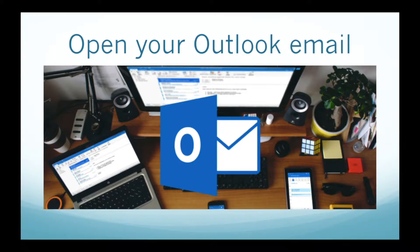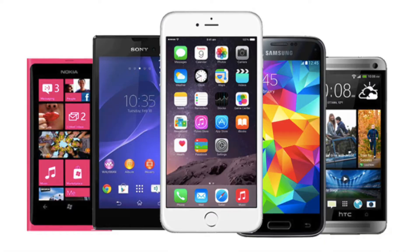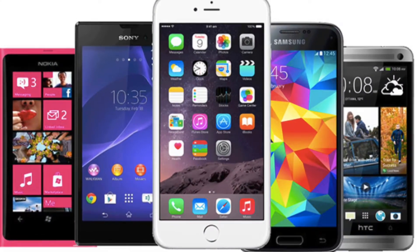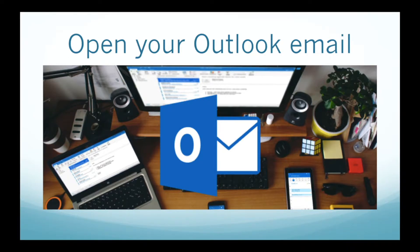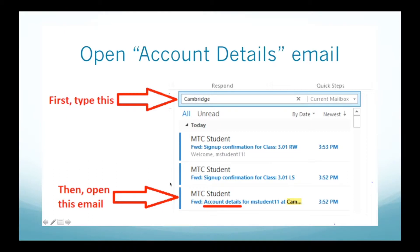The first thing you need to do is to open your Outlook email. You can do this on your laptop or you can download the app for your mobile phone. Once you have opened your Outlook email, you need to type the word Cambridge in the search box, and then you will see only three emails.